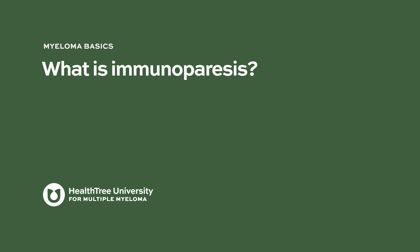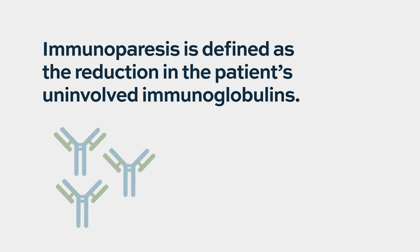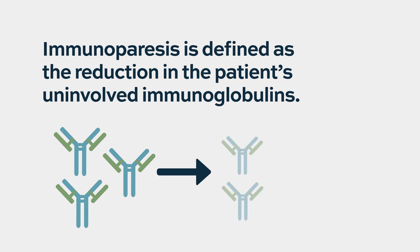What is immunoparesis? Immunoparesis is something that happens in patients — it can even start in MGUS already — where we see that if a patient, for example, has an IgG myeloma or MGUS, the other immunoglobulins are reduced. We know that the plasma cells in the bone marrow take up some space, but there seem to be even other effects of the myeloma or the MGUS cells on the rest of the bone marrow.